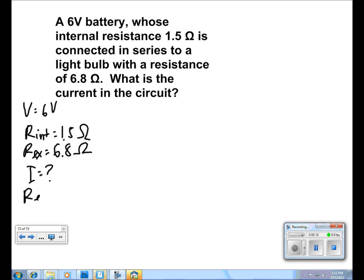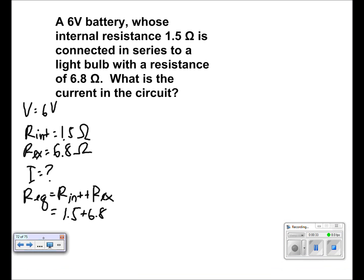In order to find the current in the circuit, we must find the equivalent resistance. The equivalent resistance of a circuit that's in series is internal resistance plus external resistance. So we add them together and we get 1.5 plus 6.8, and we get an equivalent resistance of 8.3 ohms.